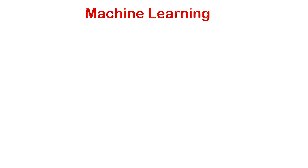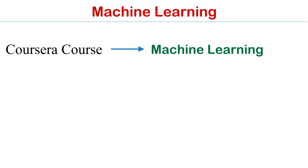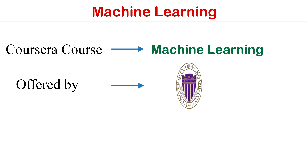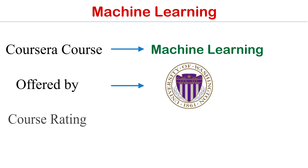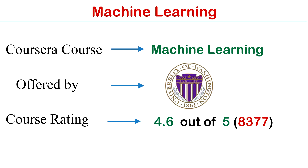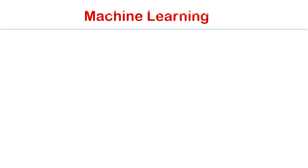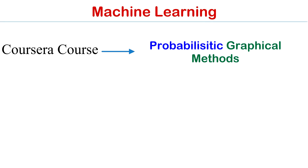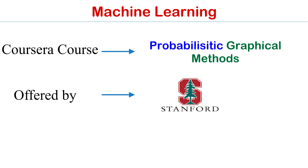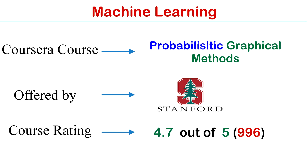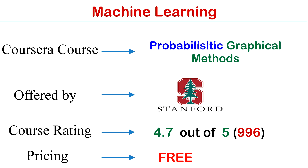Course number six is Probabilistic Graphical Models, offered by Stanford University. The rating of this course is 4.7 out of 5 and the price of this course is absolutely free.